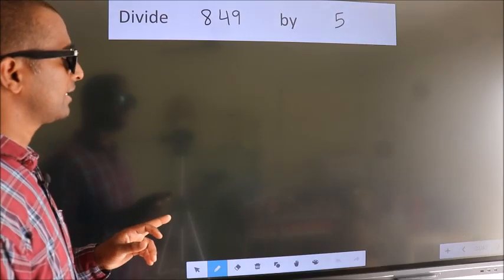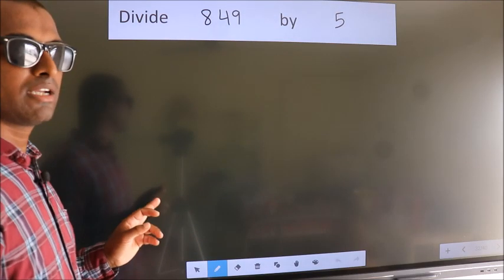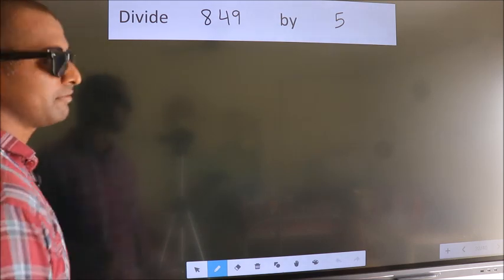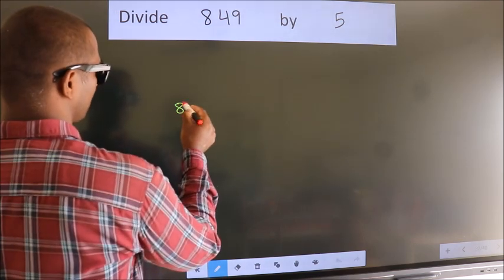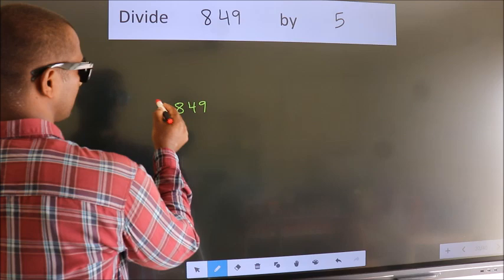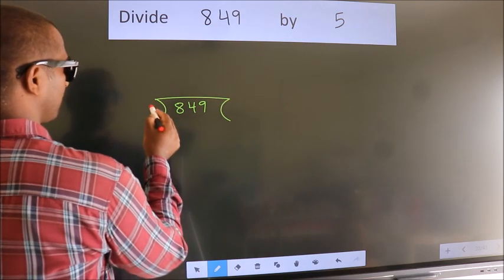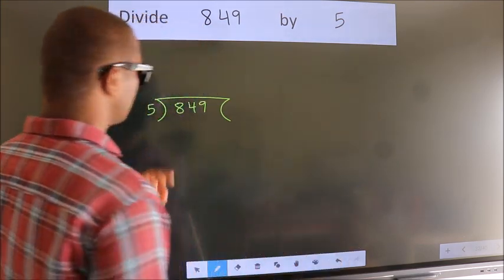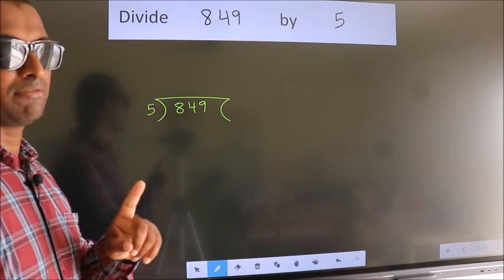Divide 849 by 5. To do this division, we should frame it in this way. 849 here, 5 here. This is your step 1.